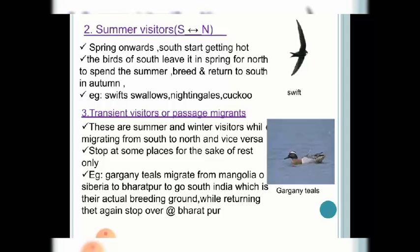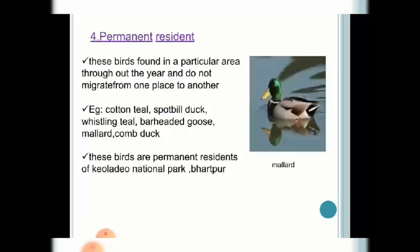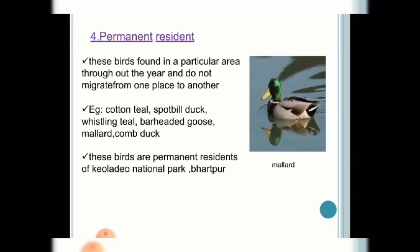This is about passage migrants, with an example being Garganey Teals. The fourth migratory status is permanent residents. These birds are found in particular areas throughout the year and do not migrate from one place to another. Examples include Mallards, Cottontail, and Bar-headed Goose. These are the four different migratory statuses of birds.